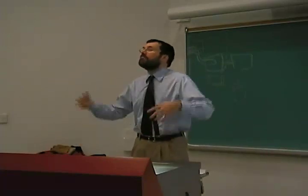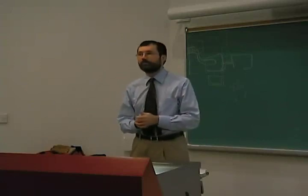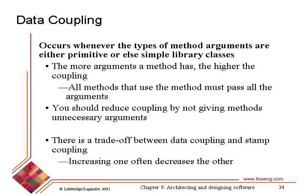Coupling is essential — to some extent — but we want to see ways we can weaken and reduce it. Data coupling is passing arguments in general, so stamp coupling was passing complex data structure arguments, while data coupling is passing arguments that are things like ints, strings, chars, and so on. The idea is: don't pass unnecessary arguments. Stamp coupling: don't pass unnecessarily complex arguments. Data coupling: don't pass unnecessary arguments of any kind. If you have arguments not being used in a procedure, remove them from the argument list.